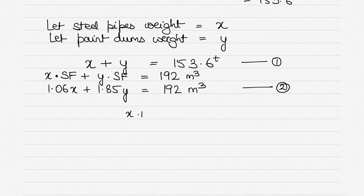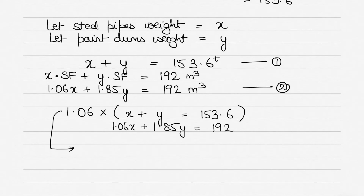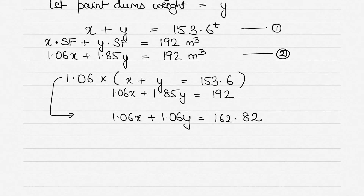We now have two simultaneous equations: equation one — x + y = 153.6, and equation two — 1.06x + 1.85y = 192. To eliminate x, I multiply equation one by 1.06 throughout, giving: 1.06x + 1.06y = 153.6 × 1.06 = 162.82.